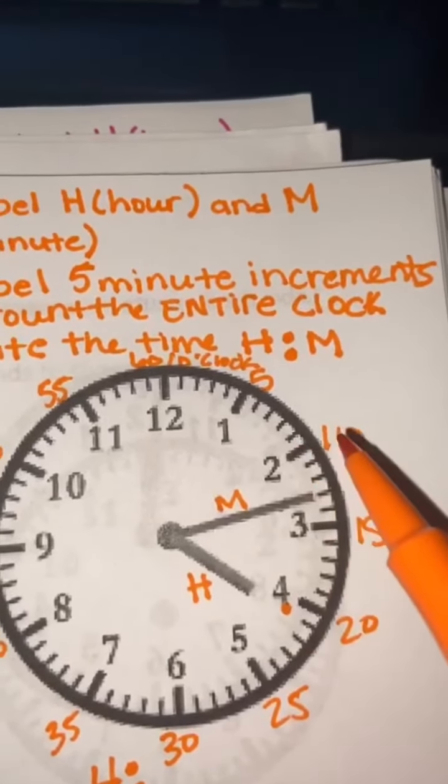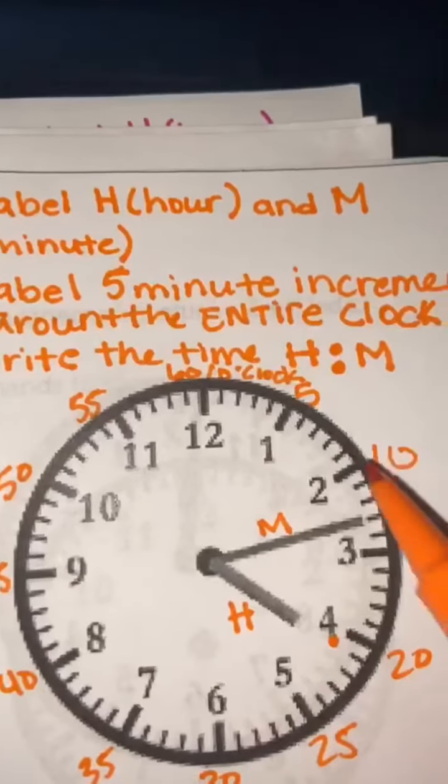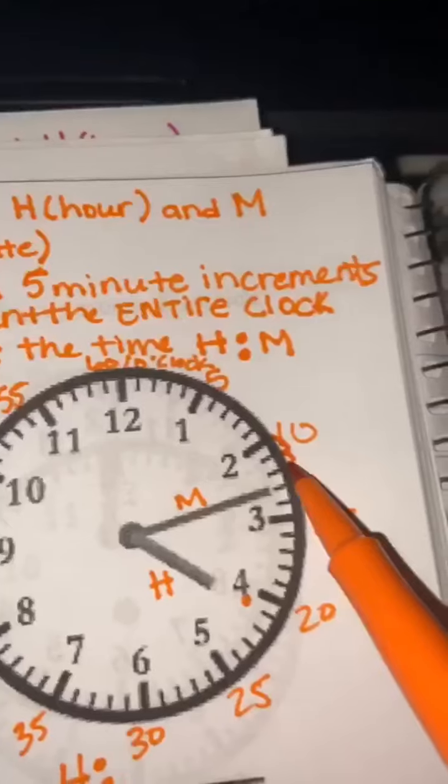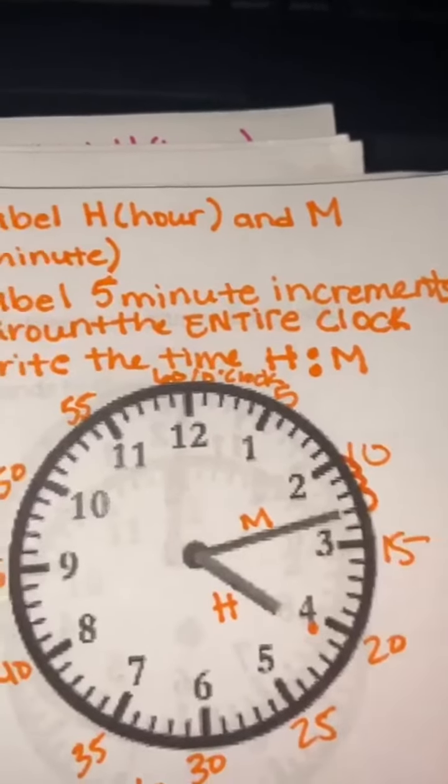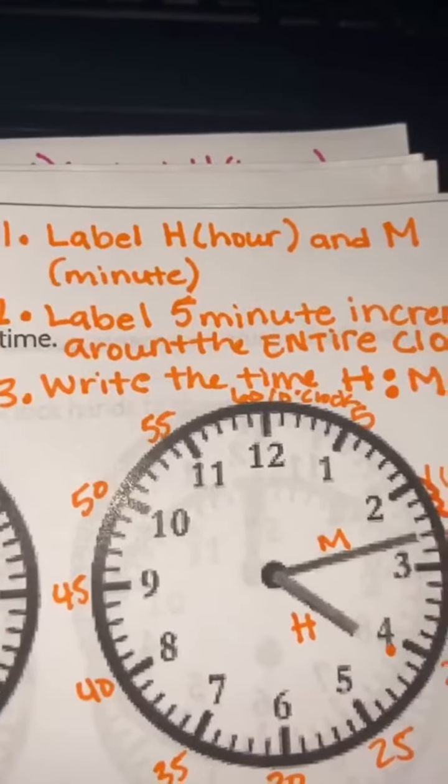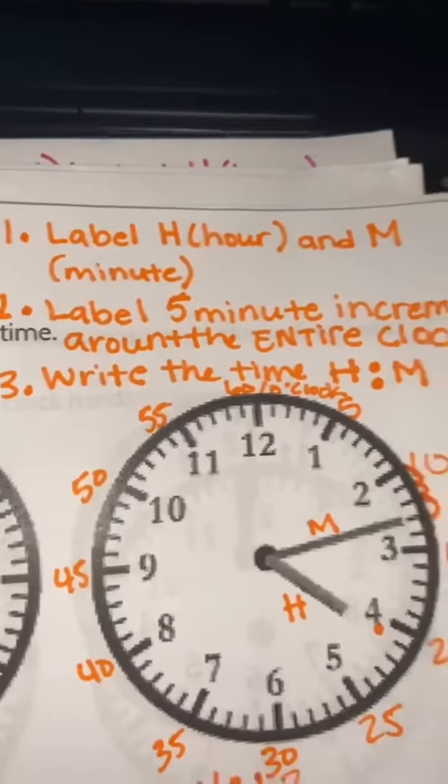So I'm going to start with 10, and then I'm going to add one. 10, 11, 12, 13. So my minute hand is at 13, so my time is 4:13.